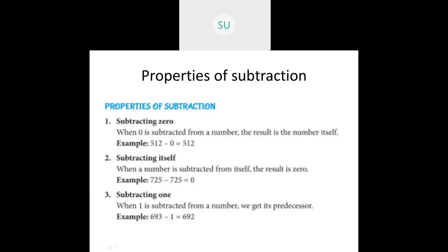For example, 512 minus 0 is 512 itself. The second property is subtracting itself: whenever a number is subtracted from itself, the result is 0. If you subtract a number from the same number, your difference will be 0.